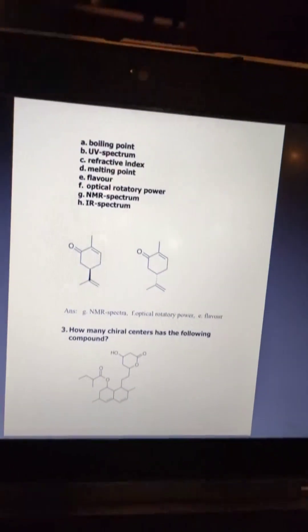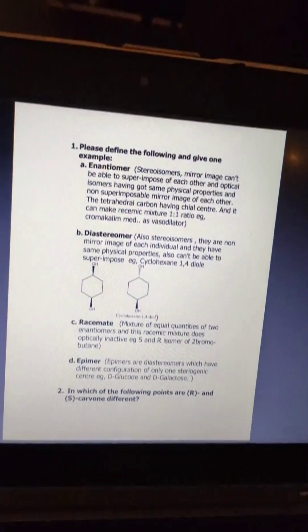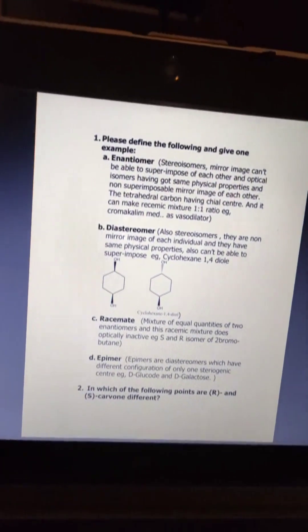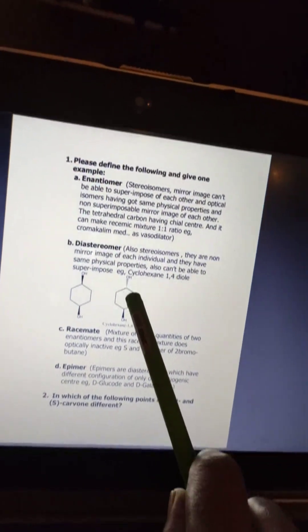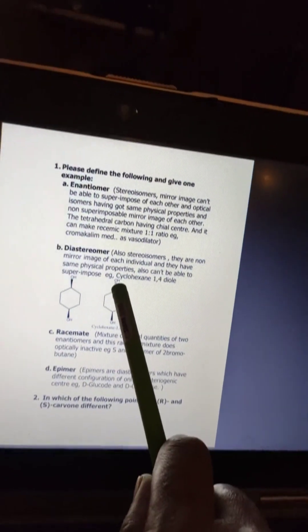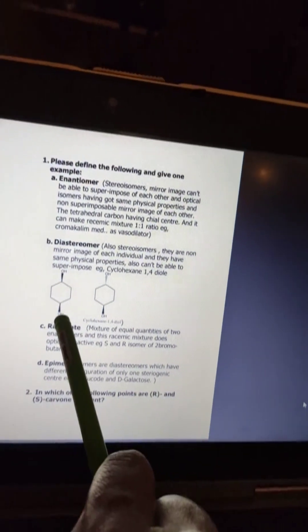Another thing is the diastereomer and the difference is that they are non-mirror images because they are not a pair image of each other. You can see here, here is the dotted lines of OH and here is the OH, means dash. Both are having the dash, the same plane.